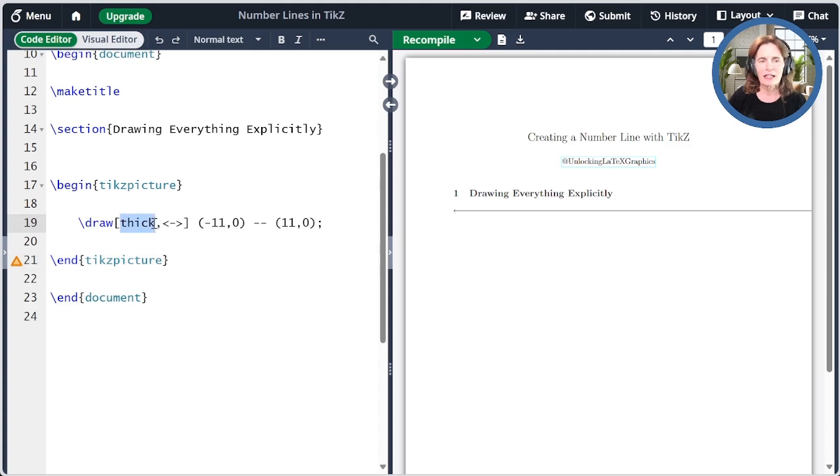I've used two options here. One is thick, and that's to make the line a bit thicker. And then I'm using less than dash greater than, which says to put arrowheads at each end. Observe that this runs off the edge of the screen.